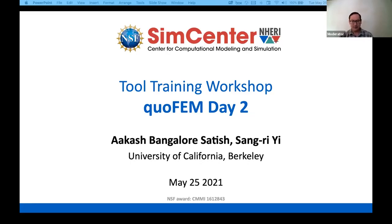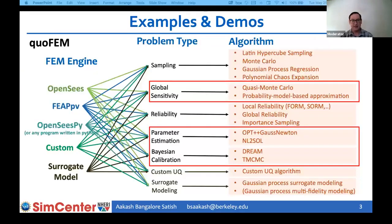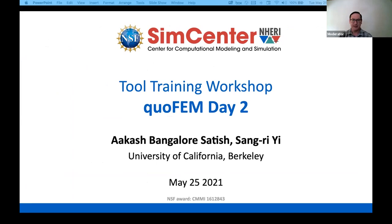Regarding how many input parameters or random variables are typically considered: a quarter of attendees said between one and five, 35% said between six and 20, 10% said more than 20 random variables, a quarter said time series or field data, and just 5% said it's not applicable to their current simulations.